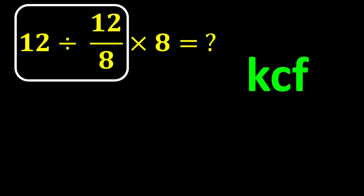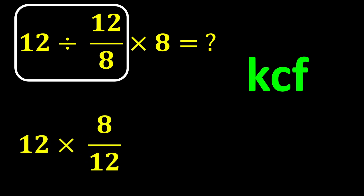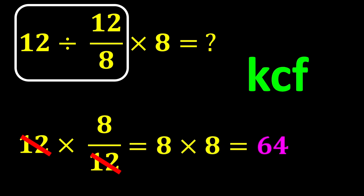Here's how it works: keep the first number as it is, change the division sign to multiplication, and flip the second number — take its reciprocal. Therefore, our expression 12 divided by 12 over 8 becomes 12 times 8 over 12. The 12s cancel each other out, leaving only 8. Finally, 8 times 8 gives 64, and 64 is our final answer.